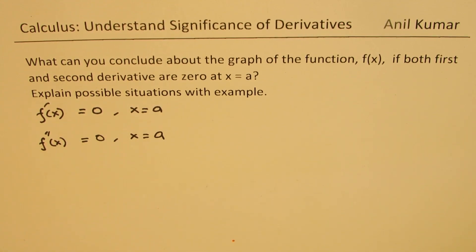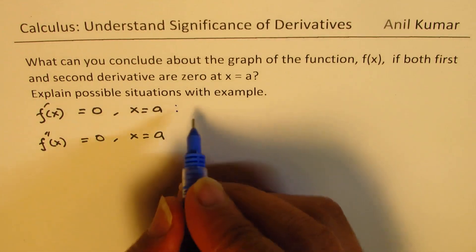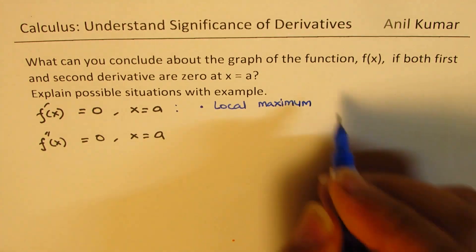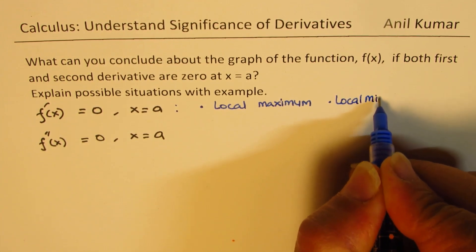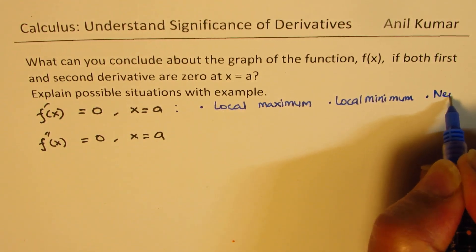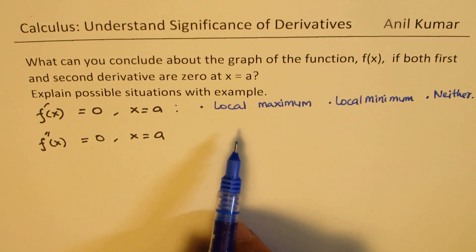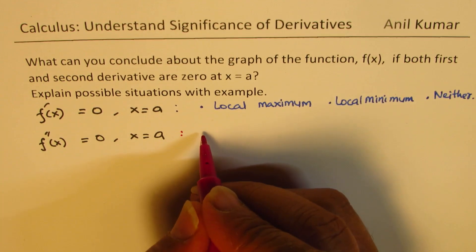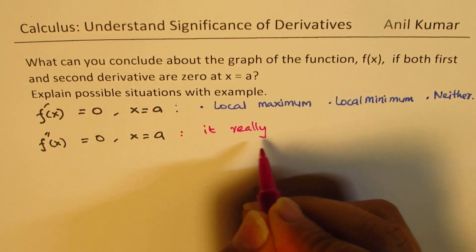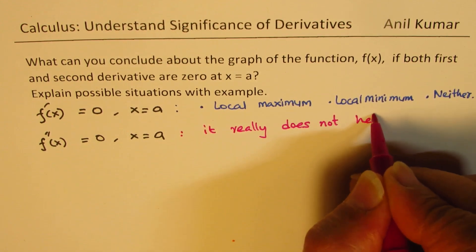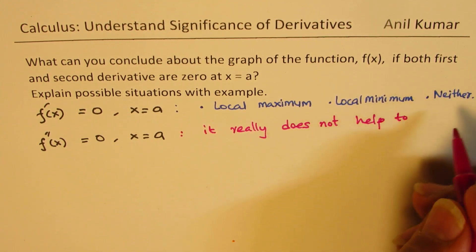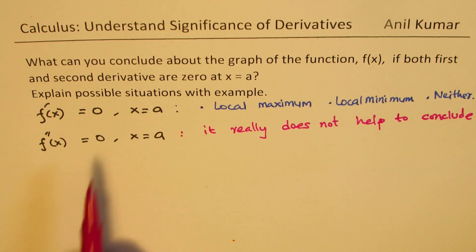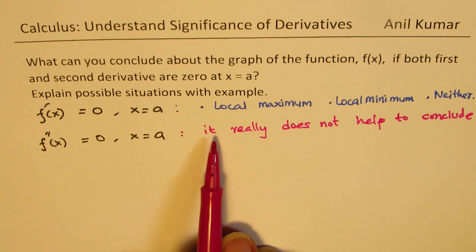So what does this mean? If the first derivative is 0 at x equals a, it could mean three things: we could have a local maximum, we could have a local minimum, or neither. Now, if the second derivative is also 0, it really does not help us to conclude. If it were not 0 — if it was positive or negative — we could have concluded. But if it is 0, it will not help us conclude.